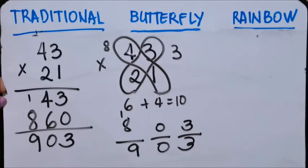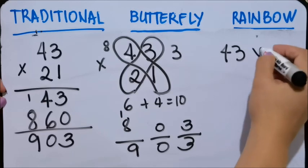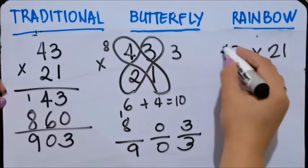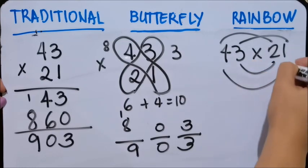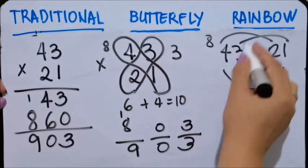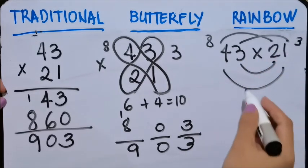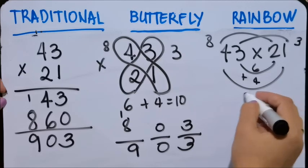Okay? Rainbow technique is 43 times 21. Again, first, second, and then the smiley. First is 8, second is 3. This one is 6 and 4, so this is 10.